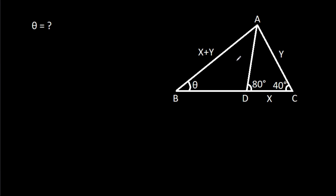In this video, we have been given that AB is x plus y, AC is y, CD is x, and angle ACD is 40 degrees, angle ADC is 80 degrees, and angle ABD is theta. Then we have to find theta.